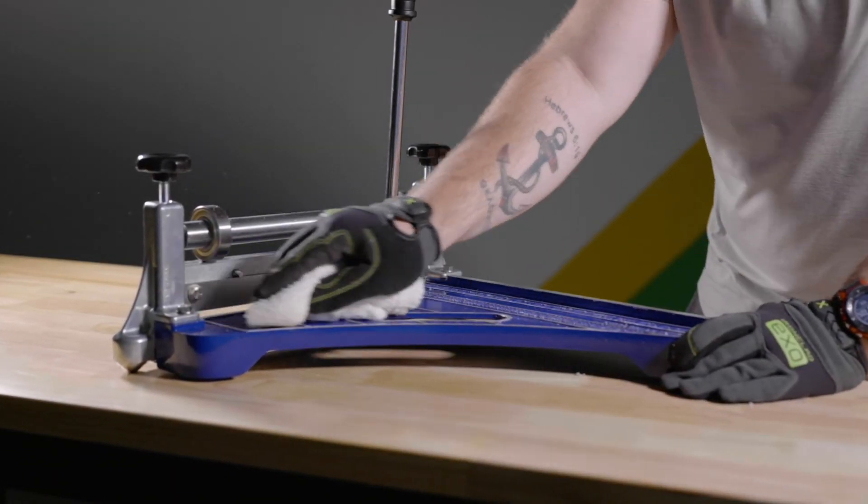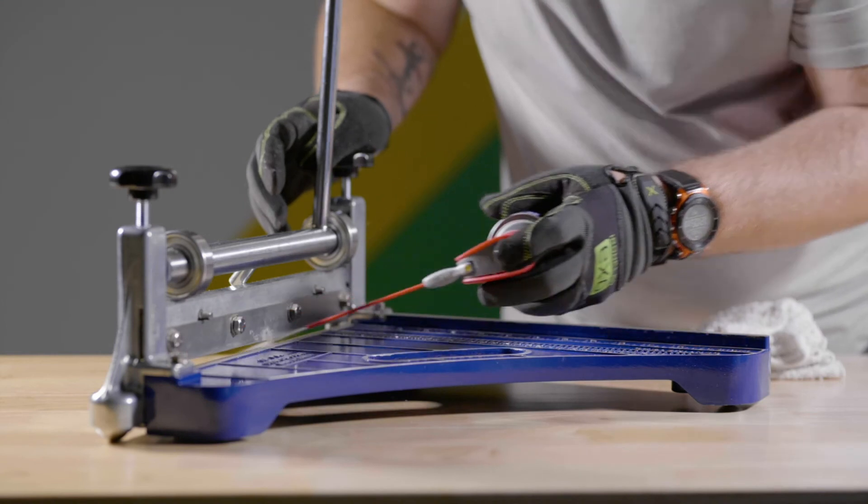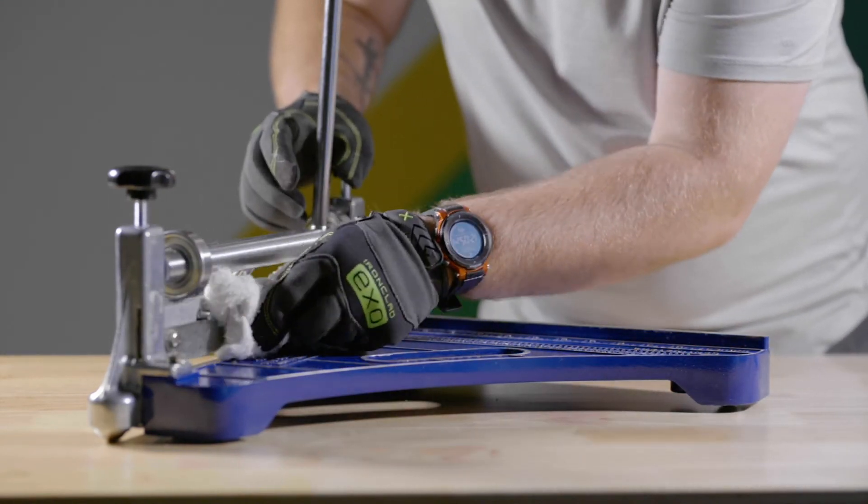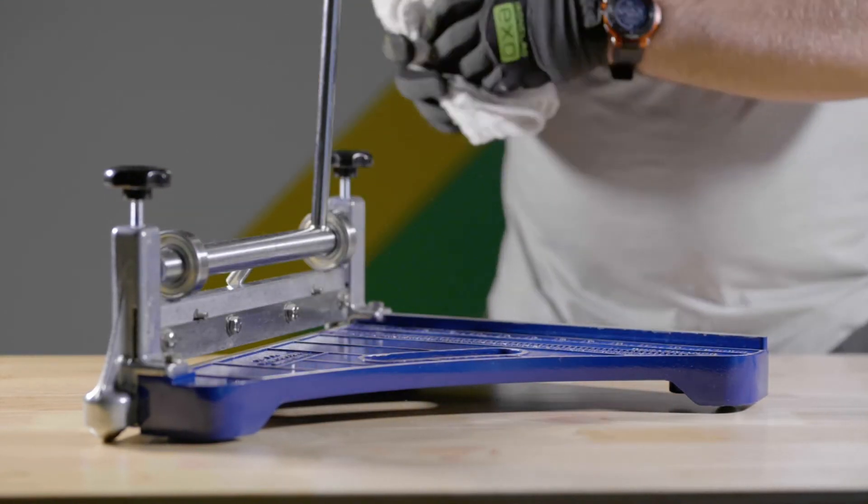Clean dust and debris off the equipment. Wipe the cutter blades and other metal parts with a cloth dampened with something oily like WD-40.